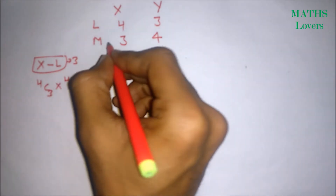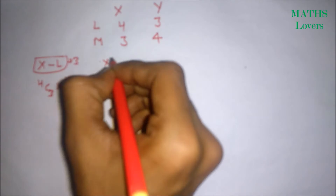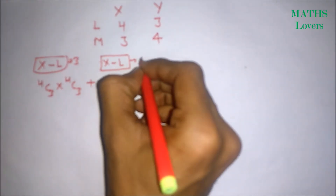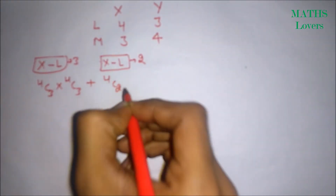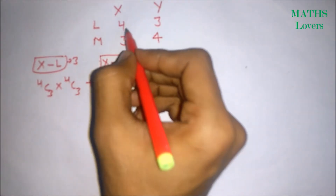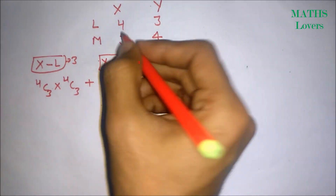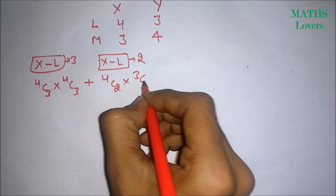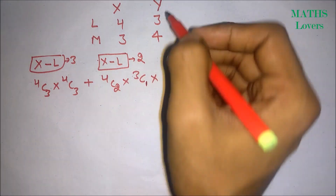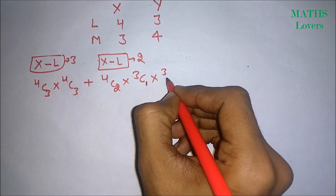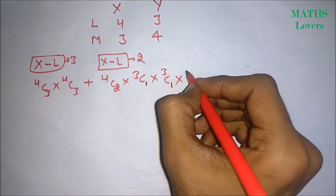Case 2: X is calling two ladies, so the ways are 4C2. Since everyone should call three friends, X will also call one man, giving 3C1. If X called two ladies, then Y will call at least one lady and two men.